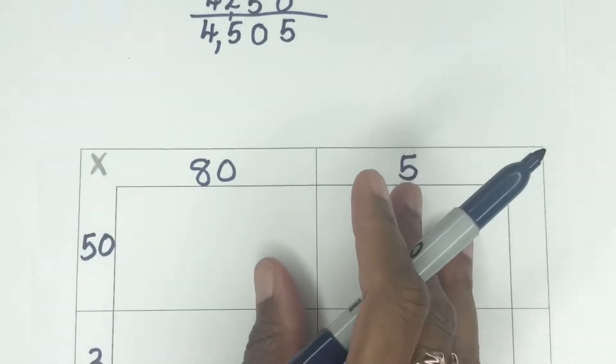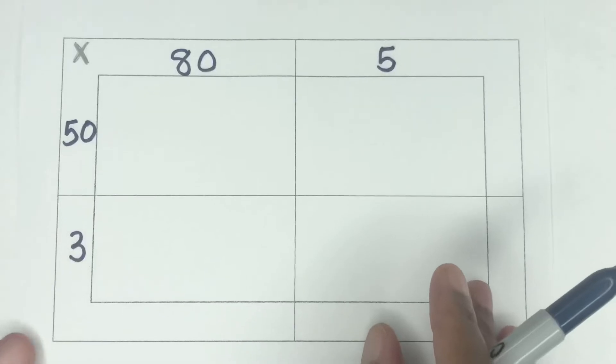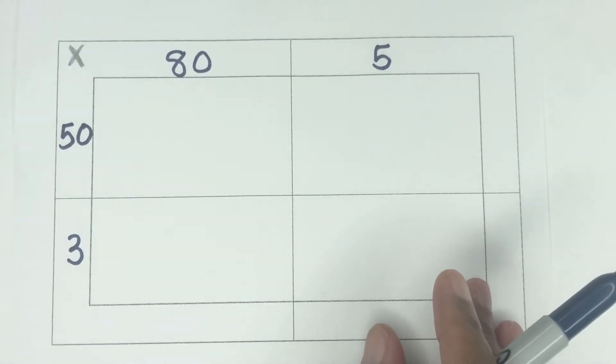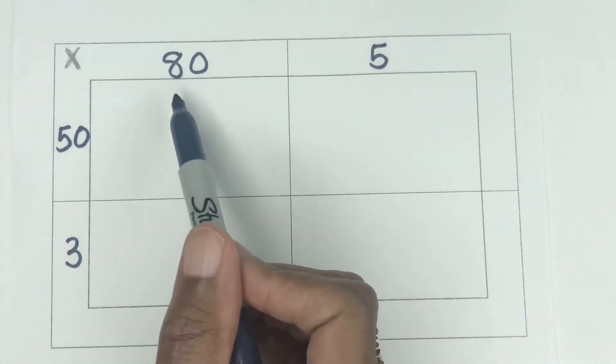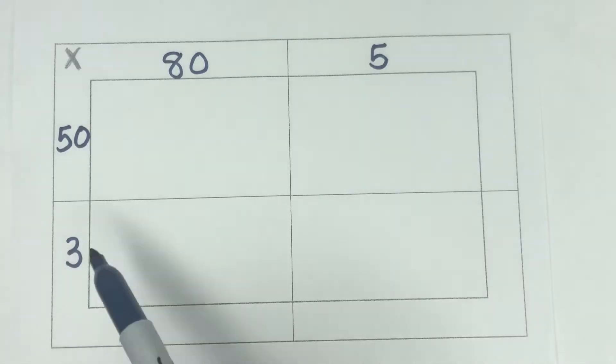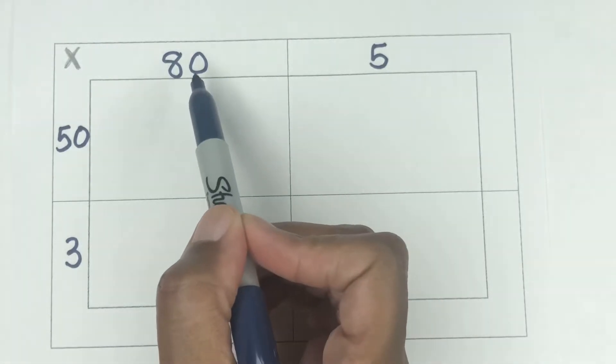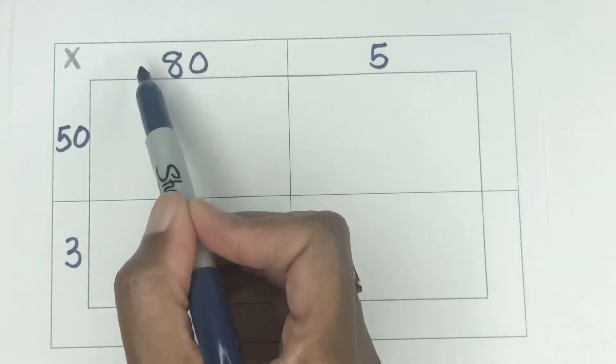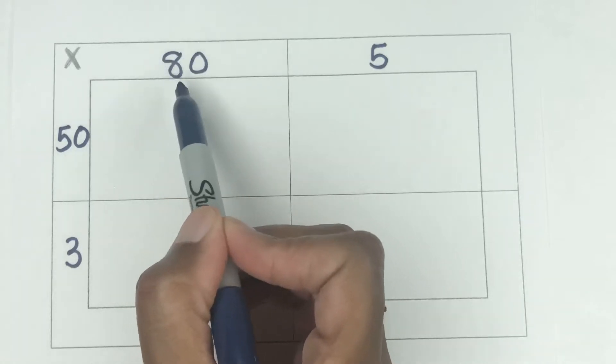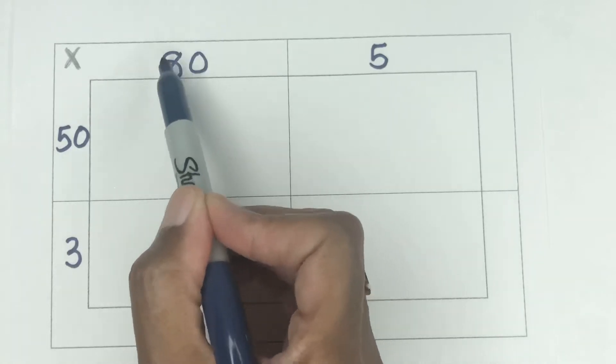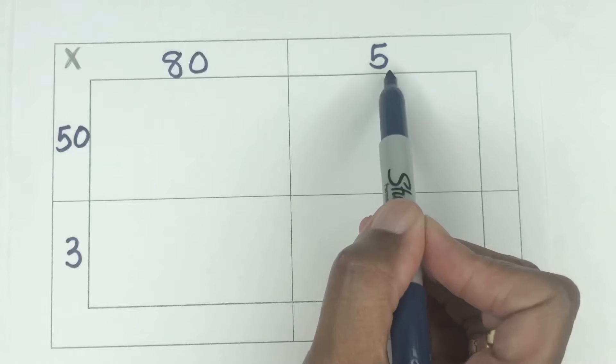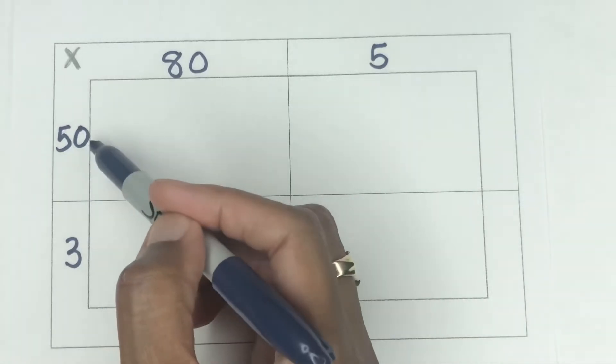Now here is the box method. So as you can see what is happening in the box method here, same numbers 85 times 53. But what we're doing here is we're separating the 80 and making it actually visually the tens place. So 85 is 80 plus 5, 53 is 50 plus 3.